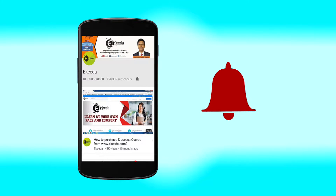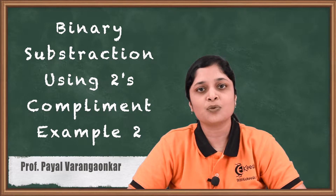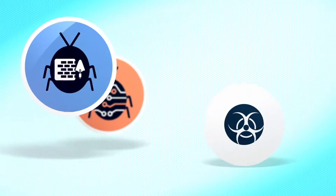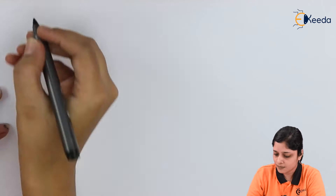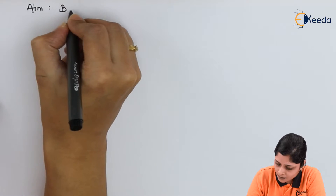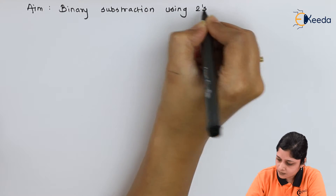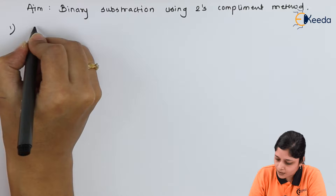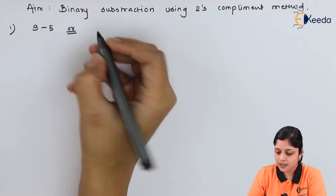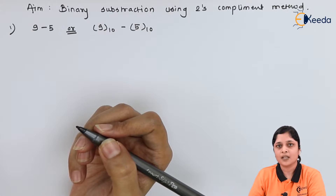Click the bell icon to get the latest videos from Ikeda. Hello friends, now we are going to see binary subtraction using the 2's complement method. We will start with an example for binary subtraction using the 2's complement method. The aim is binary subtraction using the 2's complement method. The example is 9 minus 5, that is 9 base 10 minus 5 base 10, solved by the 2's complement method.